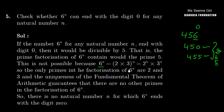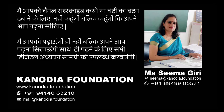So, the only prime factors of 6 raised to the power n are 2 and 3, and the uniqueness of the Fundamental Theorem of Arithmetic guarantees that there are no other primes in the factorization of 6 raised to the power n. Therefore, there is no natural number n for which 6 raised to the power n ends with the digit 0.